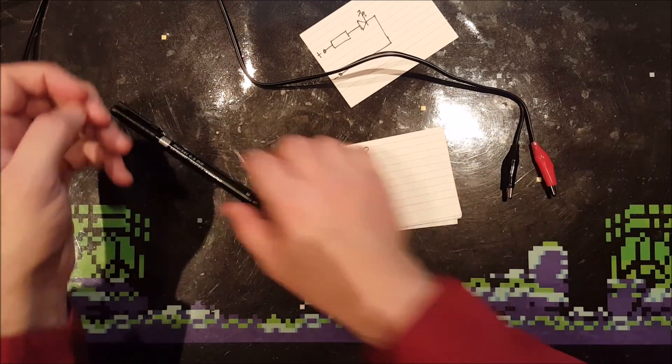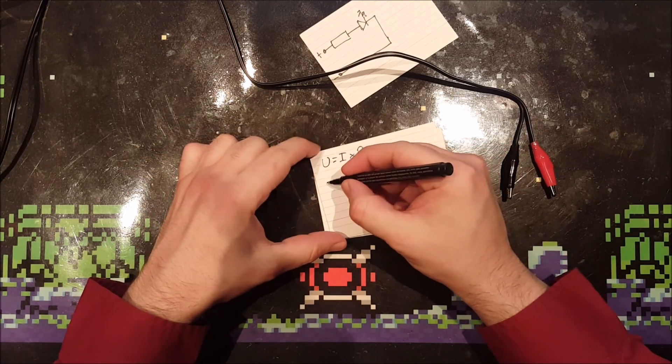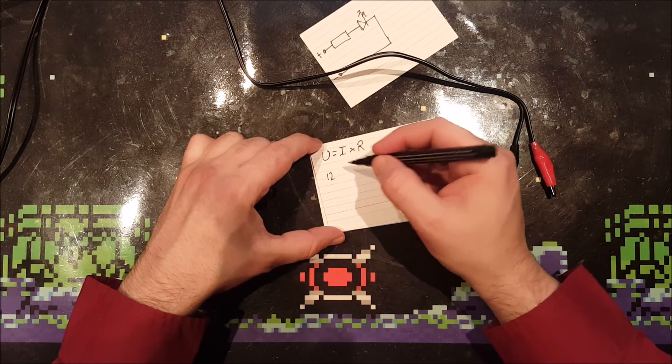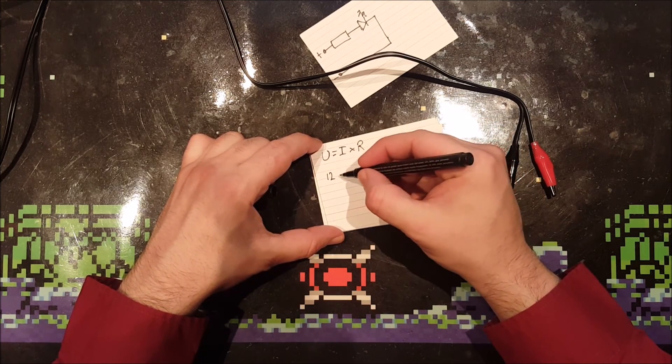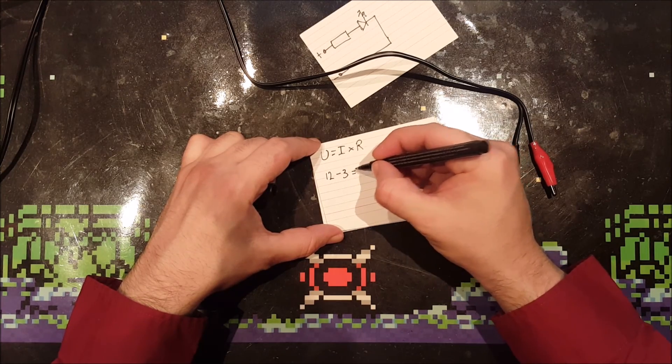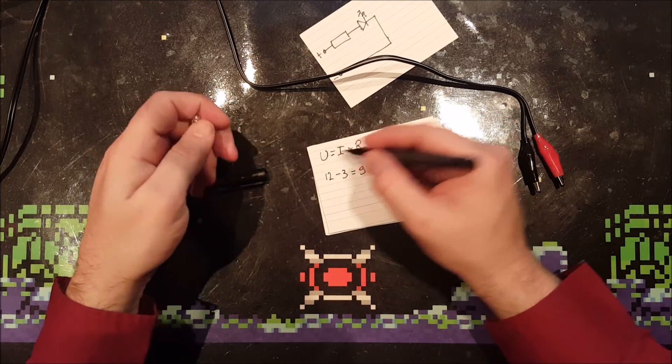Let's say your power supply draws 12 volts. Then you need the resistor to drop 9 volts, because 12 volts minus the 3 volts of the LED is 9 volts.